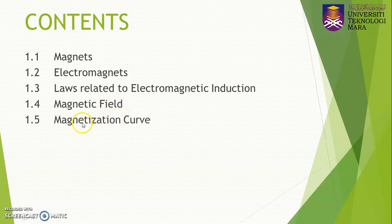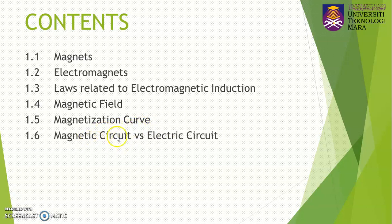After that, we are going to see the magnetization curve — in other words, the relationship between magnetic flux intensity versus magnetic flux density. Then we move to the next sub-chapter, which is magnetic circuit versus electric circuit, and after that we are going to see what does it mean by the fringing effect.